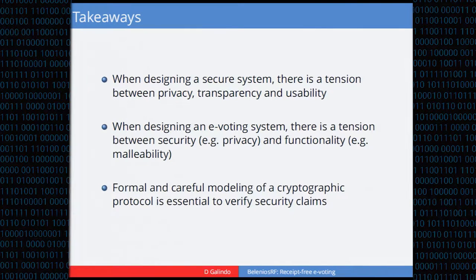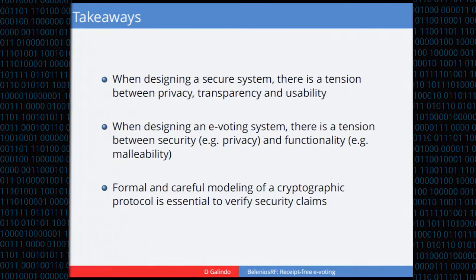In the particular case of e-voting, we also have a particular tension between security and functionality. In our research, by security I meant privacy, and by functionality I meant malleability, because almost every electronic voting protocol makes use of malleability — you need malleable primitives. But it cannot be too malleable, otherwise you will have attacks. Lastly, formal and careful modeling of cryptographic protocols is needed to verify security claims, because what we do is quite complex, and when you look more carefully, things might not be as expected.